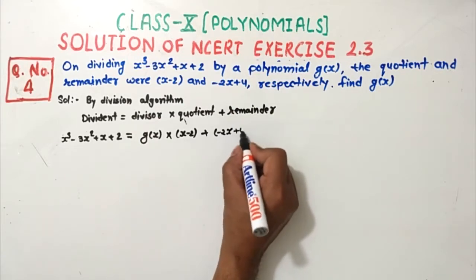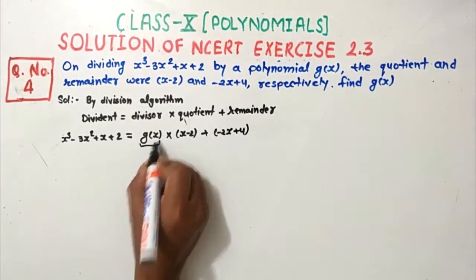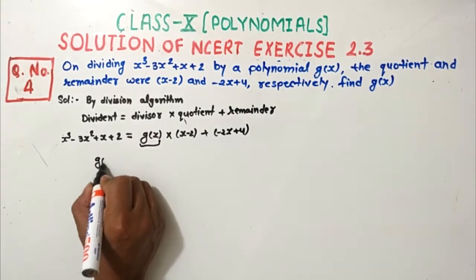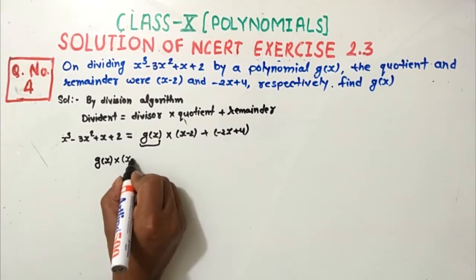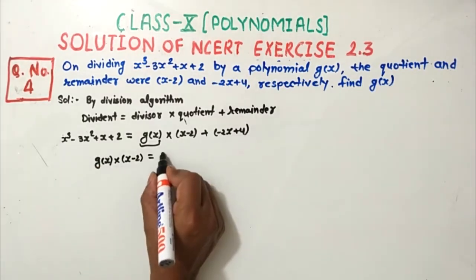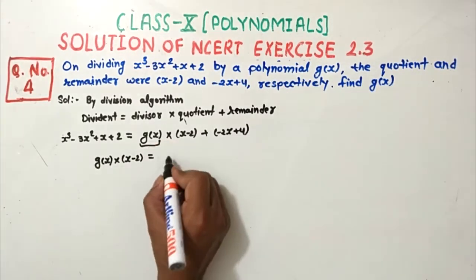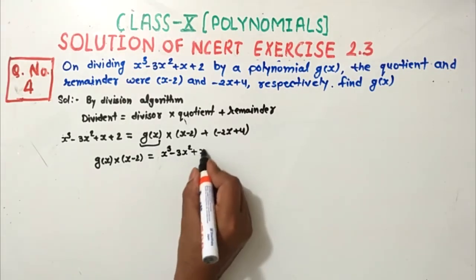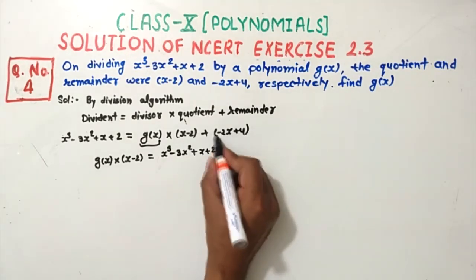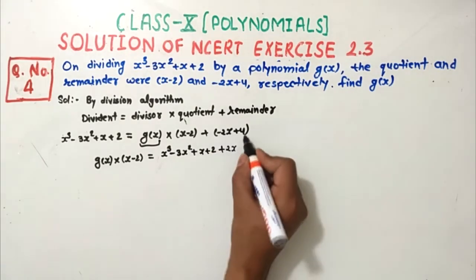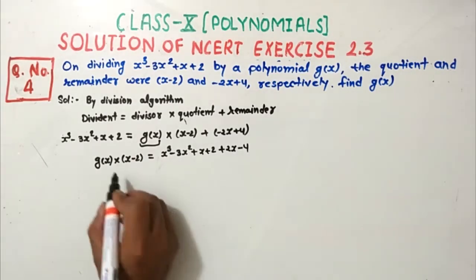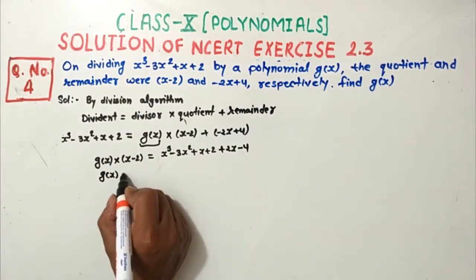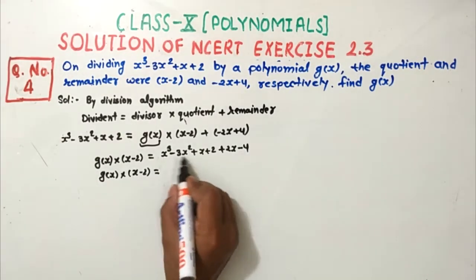So we need to finally calculate g(x). We transfer the remainder to the left side: minus 3x² plus x plus 2 plus 2x minus 4. The positive 2x becomes part of the numerator and the sign changes. So g(x) into (x minus 2) equals this expression.